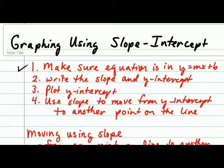After doing so, we can make sure that we write the slope and the y-intercept down, then we would plot the y-intercept, and then use the slope to move from the y-intercept to another point on the line.